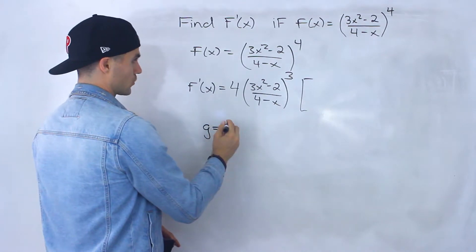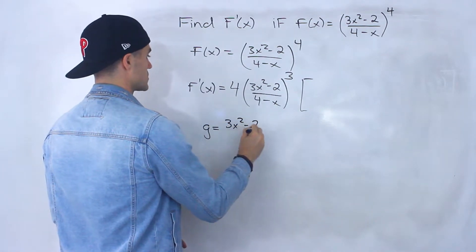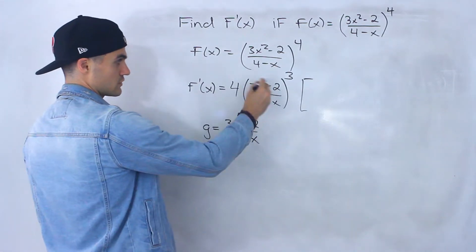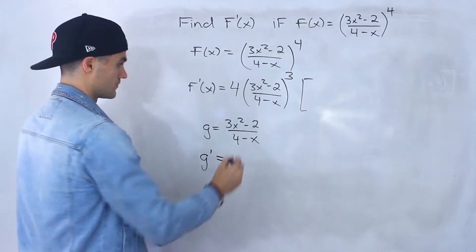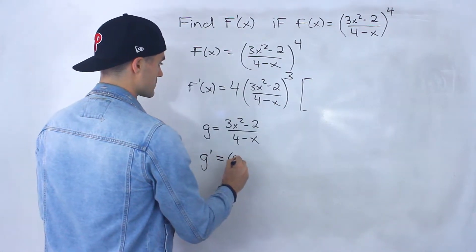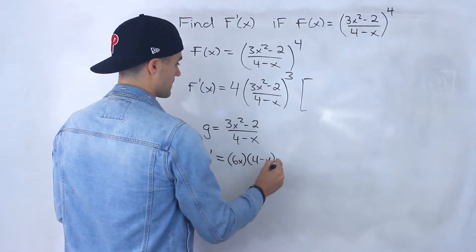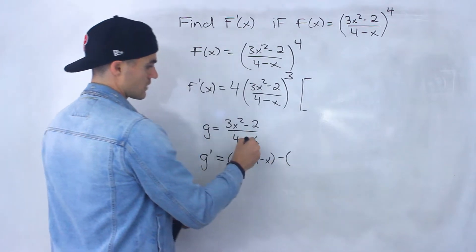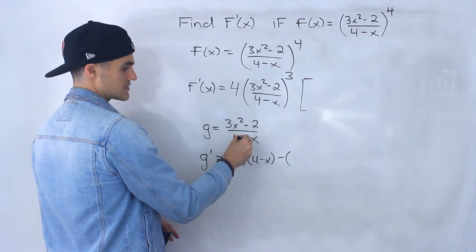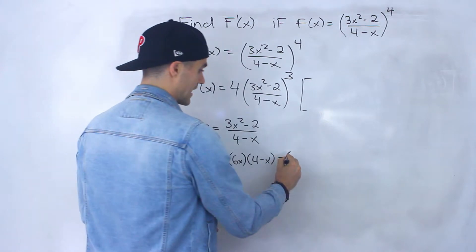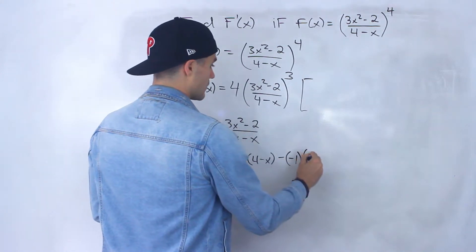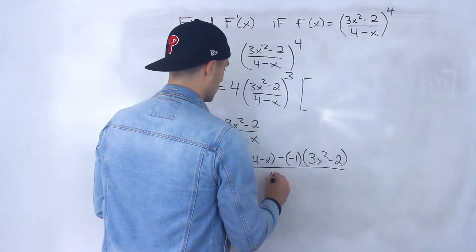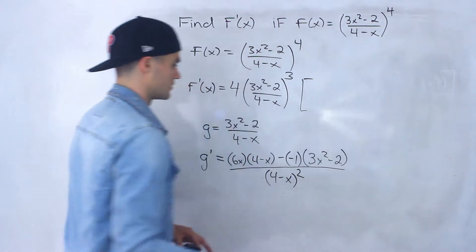So let me work with that inside function separately. We have 3x squared minus 2 over 4 minus x. To find the derivative of this function, we would apply the quotient rule. Taking the derivative of the top: 6x times 4 minus x, minus the derivative of the bottom function. The derivative of the bottom — notice there's a negative 1x here, so the derivative is negative 1. Then the top function stays as is, and this is all over 4 minus x, that bottom function, squared.